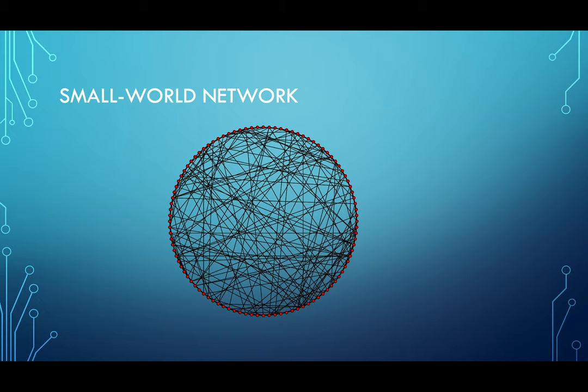The second network structure is the small-world network. The small-world network starts with a ring lattice network, where each node is connected to the closest same number of neighbors — let's say each node is connected with the closest six neighbors. But then we rewire some of the edges, so one node can be connected to four closest neighbors but also has two links connected to far-away nodes. You can tell from the graph that the small-world network has a completely different structure compared to the random network.